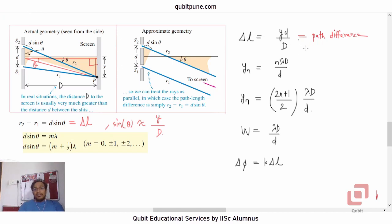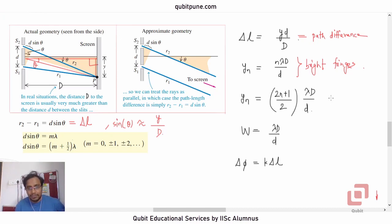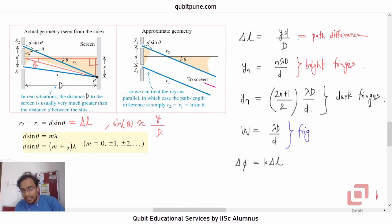When you equate the path difference to n·λ (an integral multiple of lambda), you get the locations of bright fringes: the nth bright fringe is at distance n·λ·D/d from the center of the screen on either side. The location of dark fringes corresponds to half-integral multiples. The fringe width — how wide every fringe is — is λ·D/d, and the dark and bright fringes both have the same width.